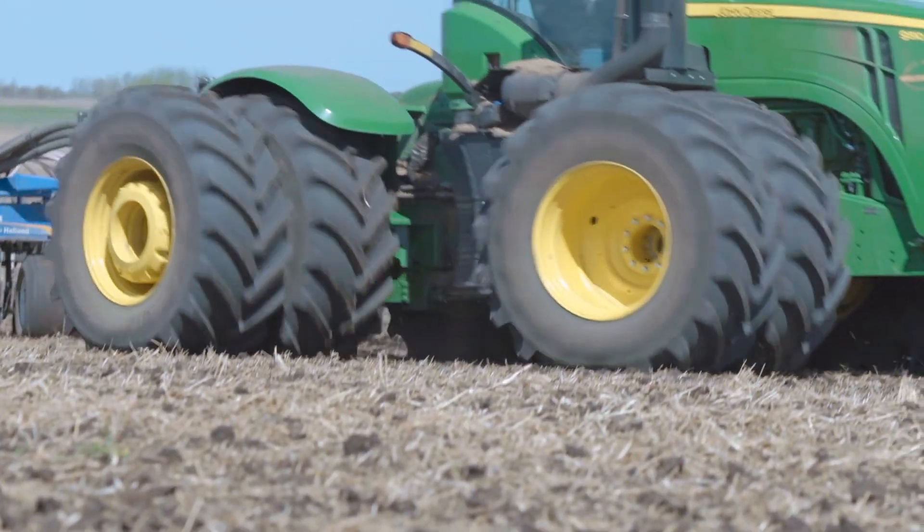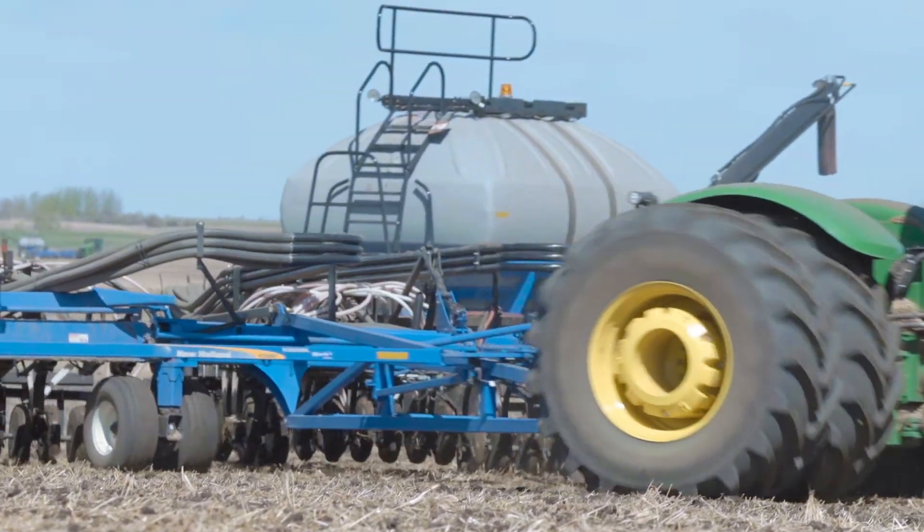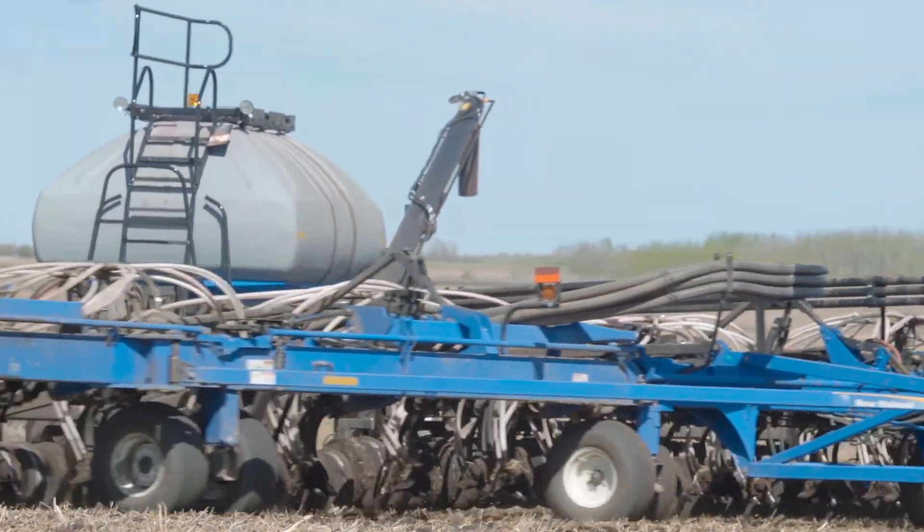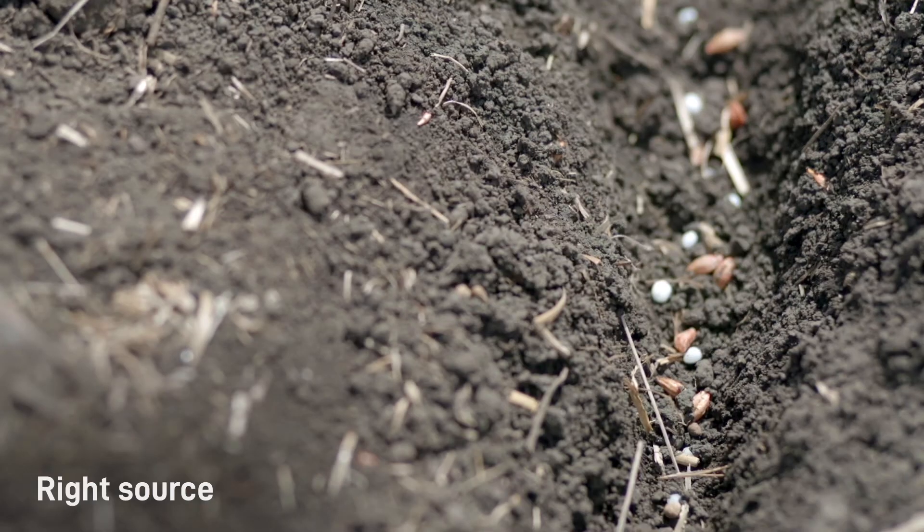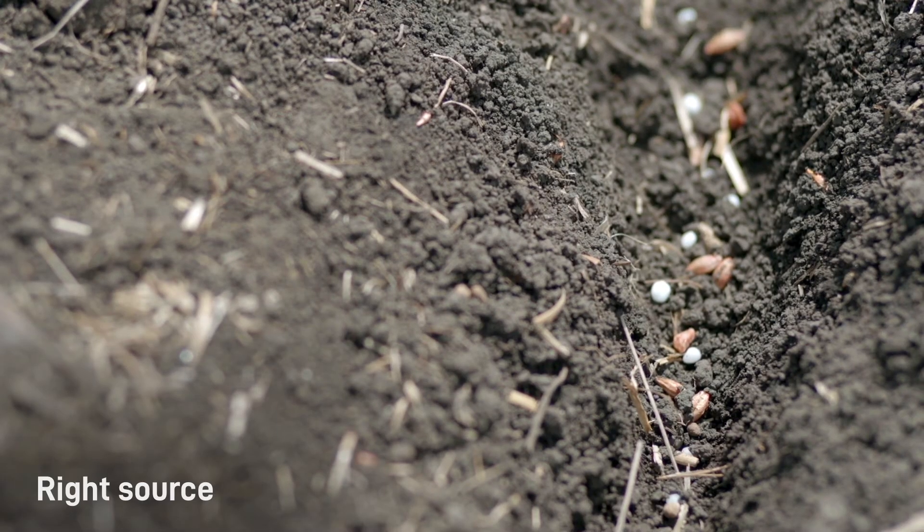Next, they can use the 4R nutrient stewardship system to precisely apply the nutrients required to grow a healthy crop. Farmers start with the right source to determine the correct combination of nutrients, then they figure out the exact amount the plant needs.